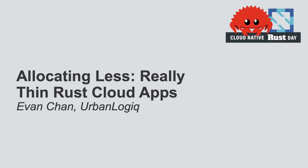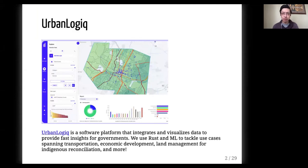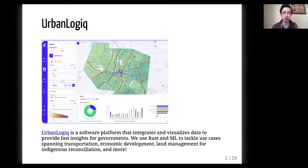Hi everyone. My name is Evan Chan. I'm a senior data engineer at Urban Logic, and welcome to my presentation. Urban Logic is an online platform that provides insights. We use Rust and machine learning, amongst other things, to give really great insights for transportation, economic development, and other community use cases.